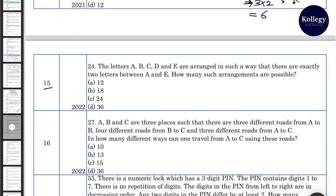Question number 15. The letters A, B, C, D, E are arranged in such a way that there are exactly two letters between A and E. How many such arrangements are possible? So A and E have 2 spaces between them. There are 4 possibilities where A and E can have 2 letters gap between them. And in remaining 3 spaces for B, C, D, there are 3 factorial ways. So this will be 4 into 3 into 2, which is 24. Option number C.